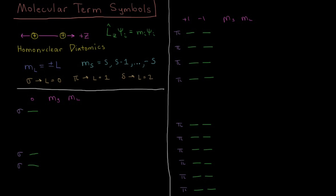Just as we've discussed electron configurations and term symbols for atoms — atomic term symbols — we can do the same thing for diatomic molecules, now that we've talked about the types of electron configurations that can occur. Just as we use atomic term symbols as a shortcut to indicate information about how the electrons are configured in particular electronic states, we can do the same thing for diatomic molecules, which have just two nuclei and some internuclear axis.